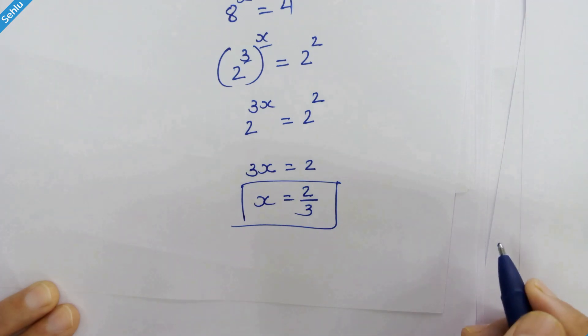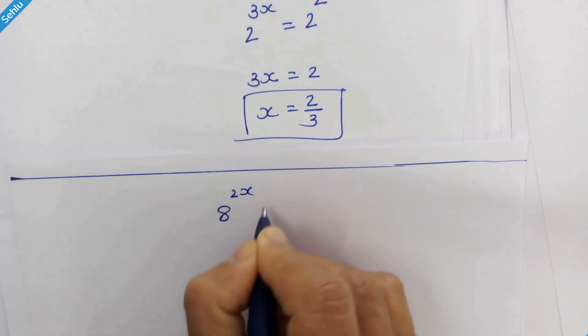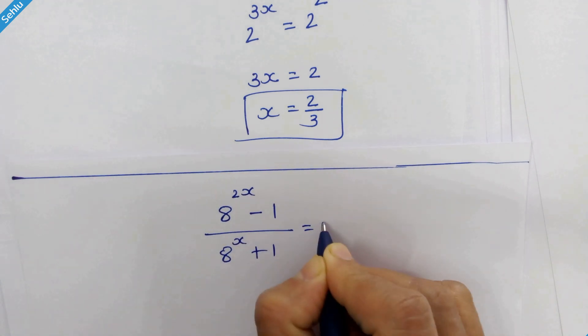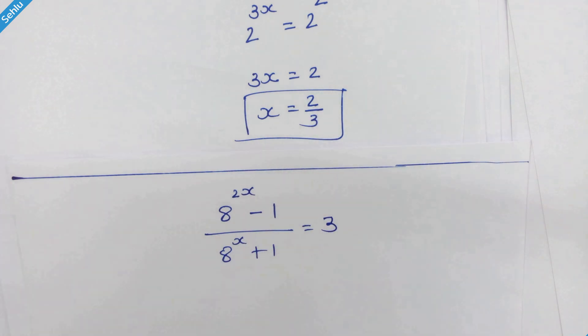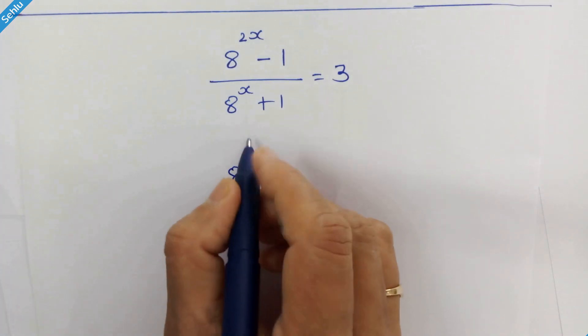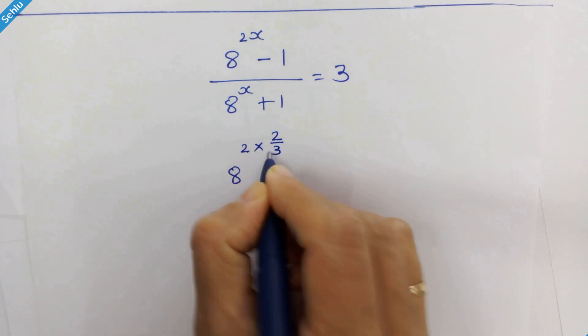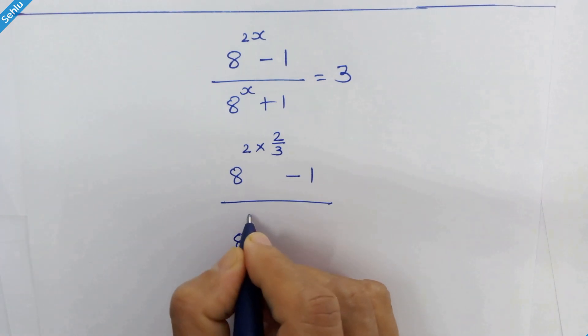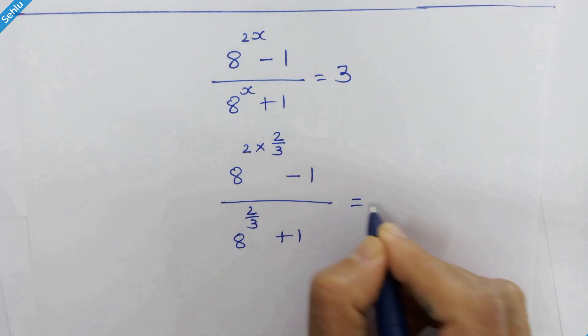Let's verify our answer. And our given equation is 8 raised to 2x minus 1 upon 8 raised to x plus 1 is equal to 3. So we have 8 raised to 2 times 2 upon 3 minus 1 upon 8 raised to 2 upon 3 plus 1 is equal to 3.